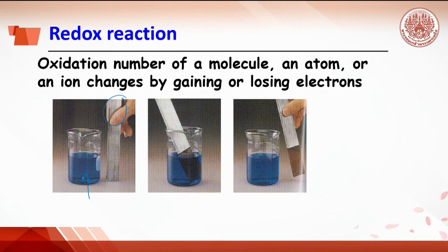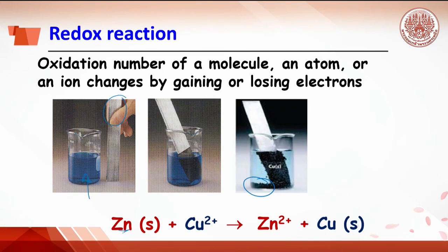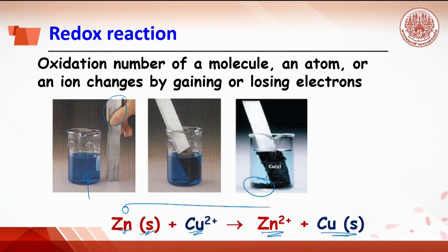If it takes longer, the copper will separate from the zinc strip. From this experiment, the equation can be written as: zinc solid reacts with copper ion to get zinc ion and copper solid. It can be seen that the oxidation number of zinc changes from zero to plus two, and the oxidation number of copper changes from plus two to zero.